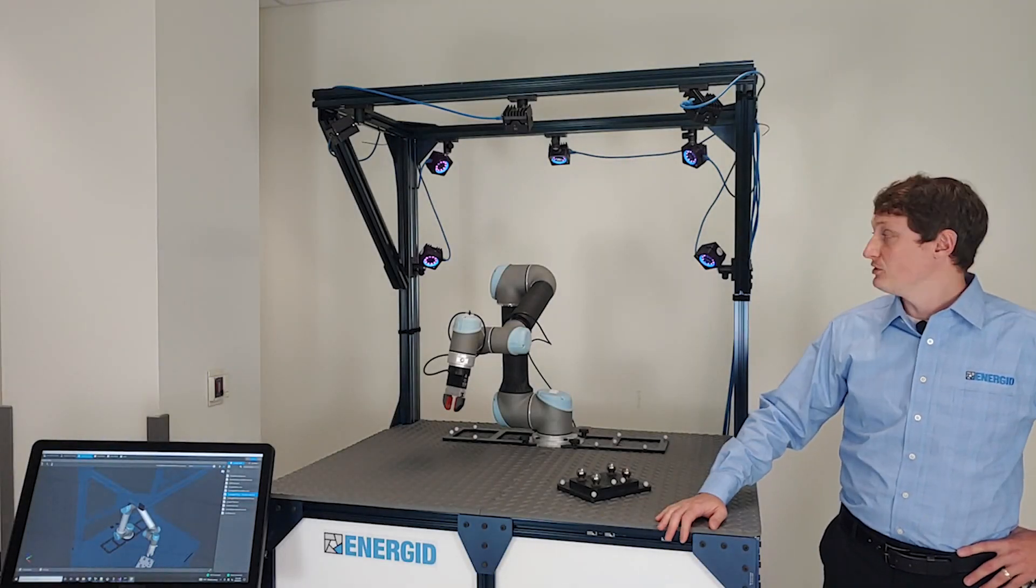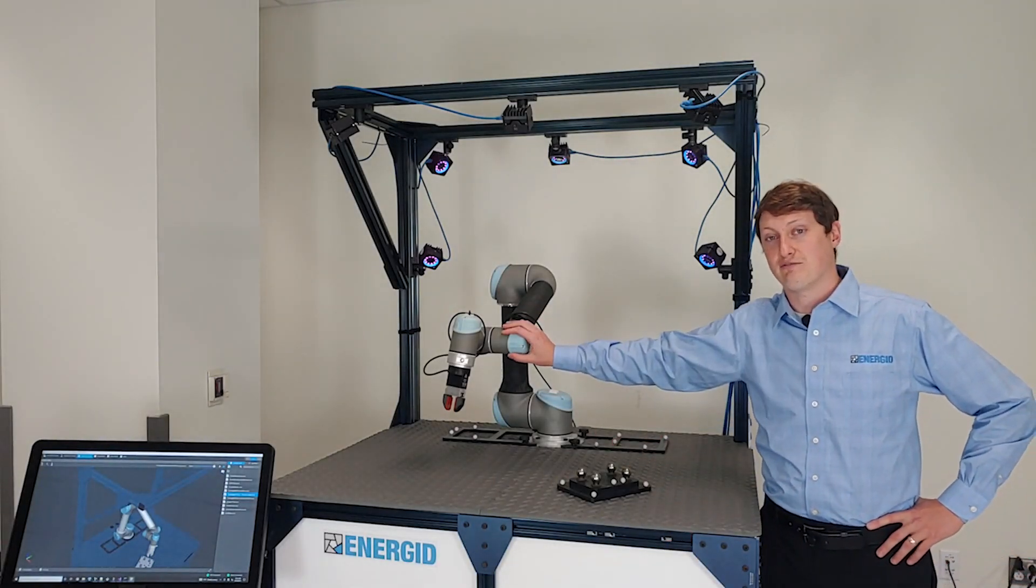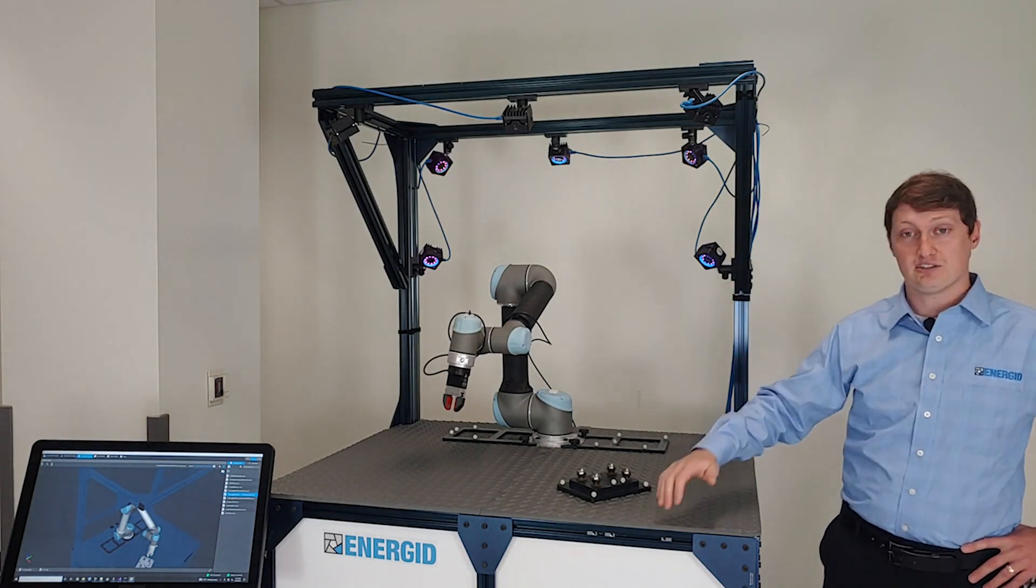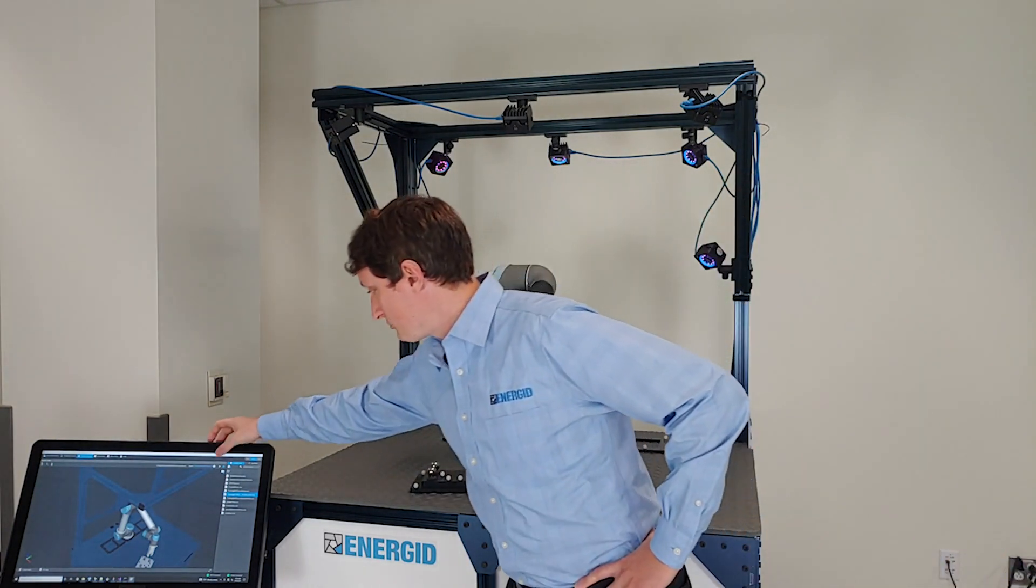There's a demonstration of Acton real-time control of the Universal Robots UR5 robot with an OptiTrack vision system. We're showing a pick and place of a part on a tray.